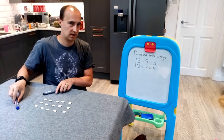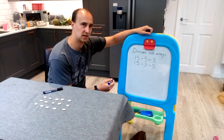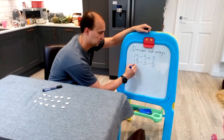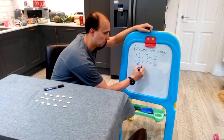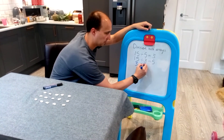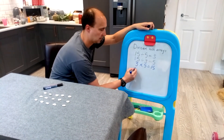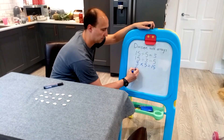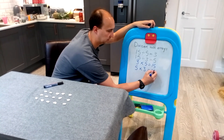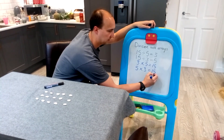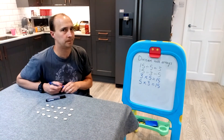And they should also be able to create two multiplication questions that go with this — so 3 multiplied by 5 equals 15, and 5 multiplied by 3 equals 15. And they should be able to do that in their heads in the abstract form.